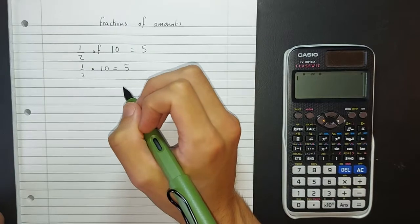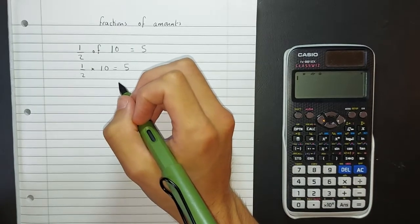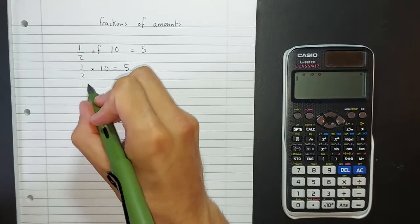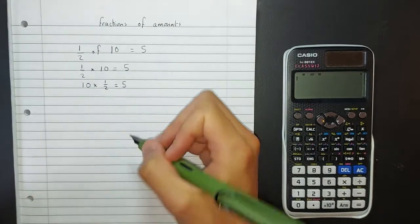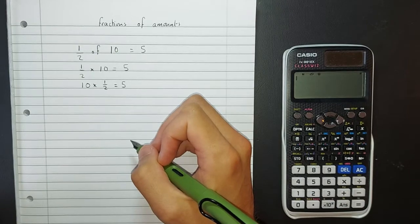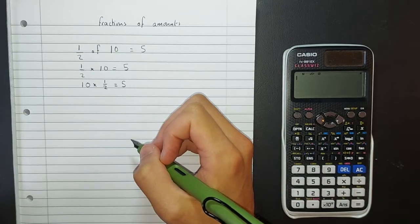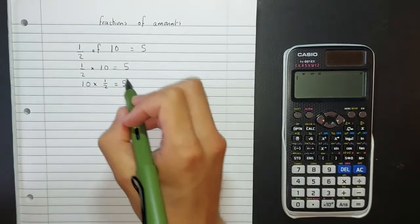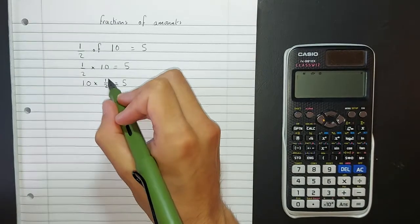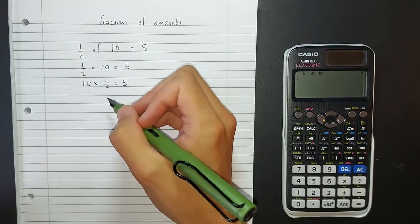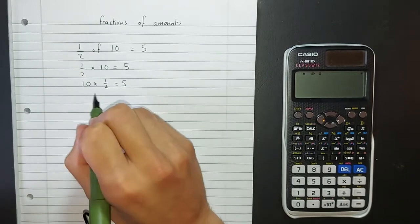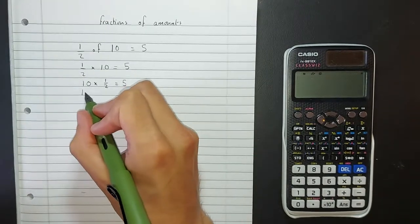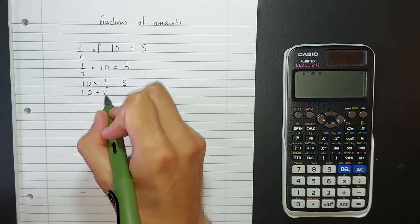And then because we're multiplying here, remember multiplication is commutative. So if we were to flip these round, ten times a half, we would still get five. There's another relationship going on here. Multiplying by a reciprocal, so multiplying by one over a number, is the same as dividing by that number. So if you were to write this as a division, you could write it as ten divided by two.